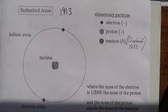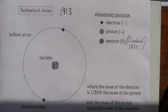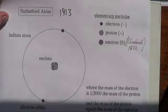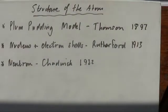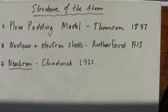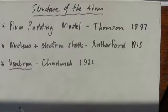Rutherford did a lot more than that, but that is in your notes so you can familiarise yourself from that. The neutron was then discovered and put forward by James Chadwick in about 1932.